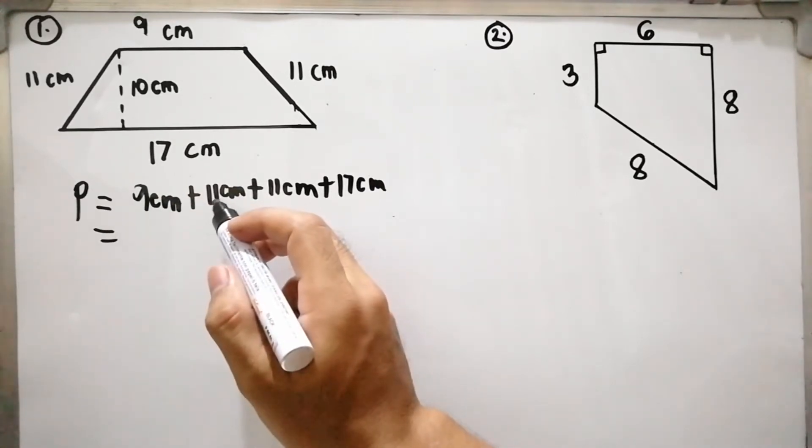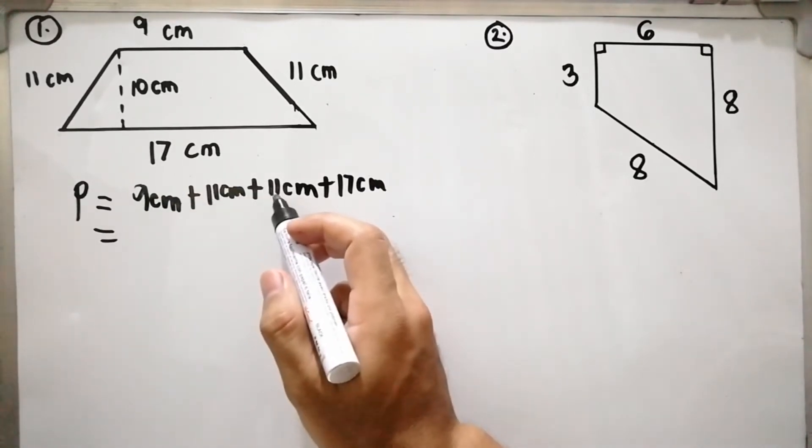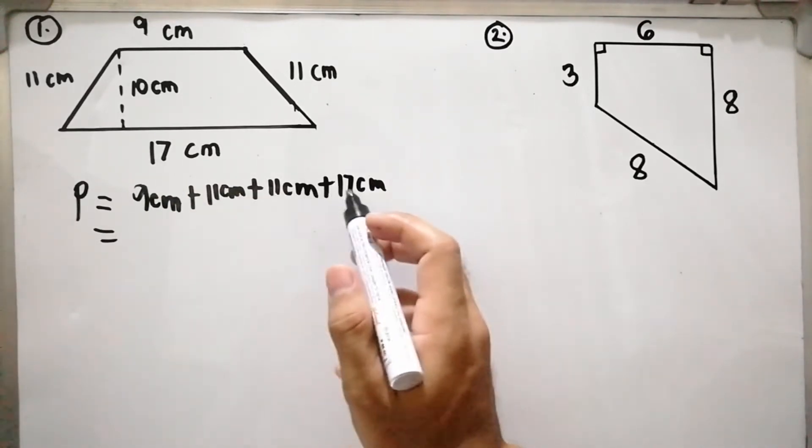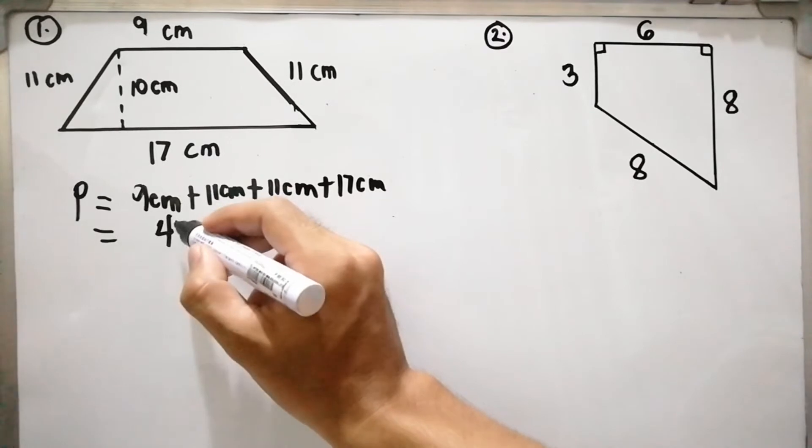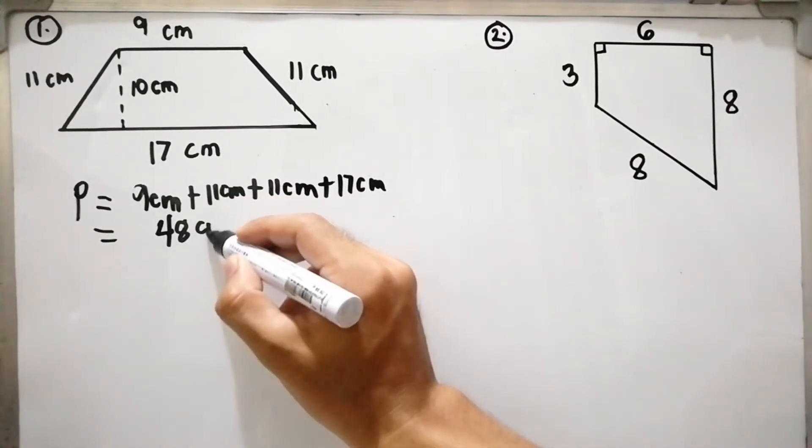...plus 11, that is 31, plus 17, giving us 48 centimeters. So the perimeter of this trapezoid is 48 centimeters.